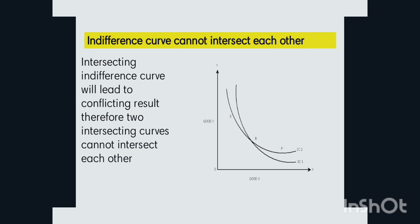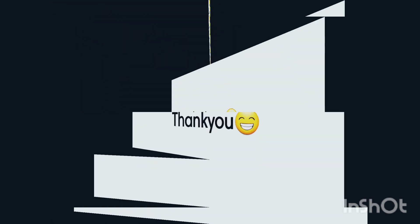Since A and B lie on the same point, A equals B — they have the same satisfaction level. Similarly, A and C lie on the same indifference curve IC2, so A equals C. But B does not equal C, because they do not give equal satisfaction. This is a contradiction, so two indifference curves will never intersect — it leads to conflict and is therefore impossible.